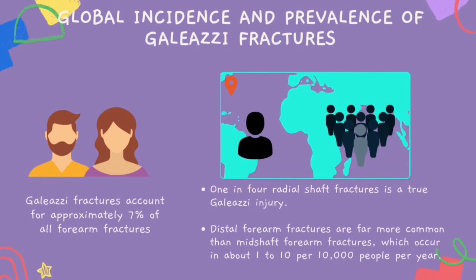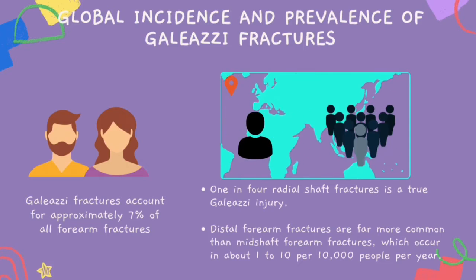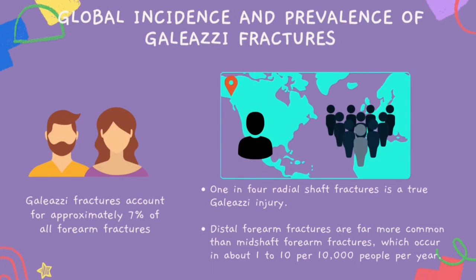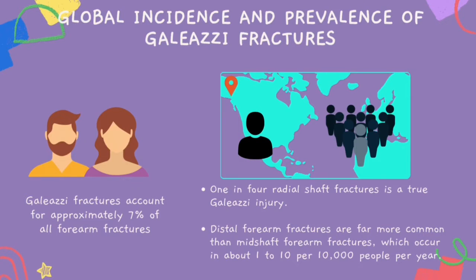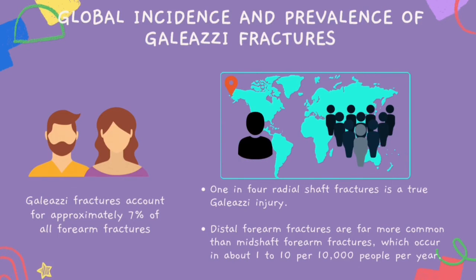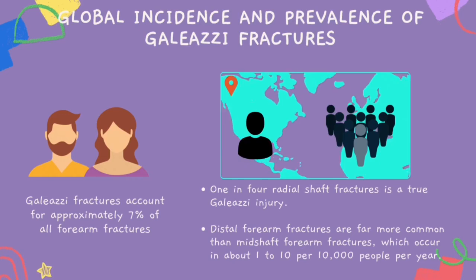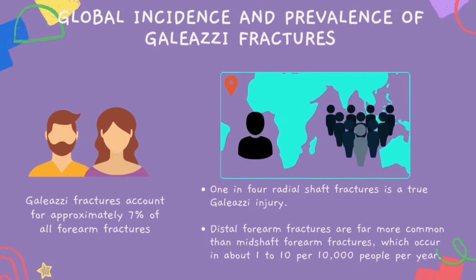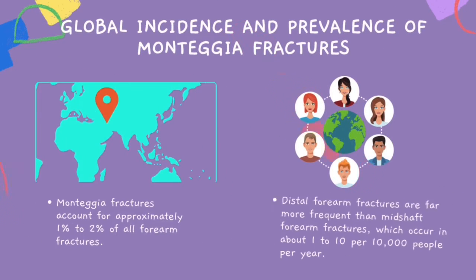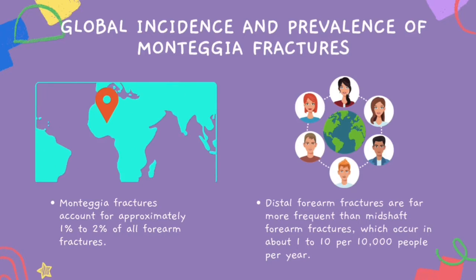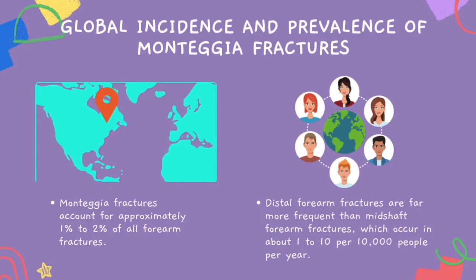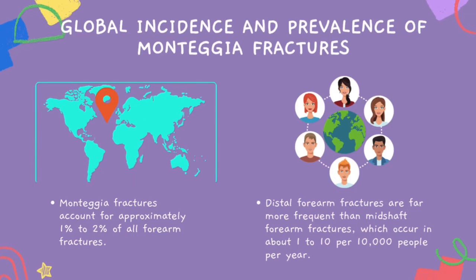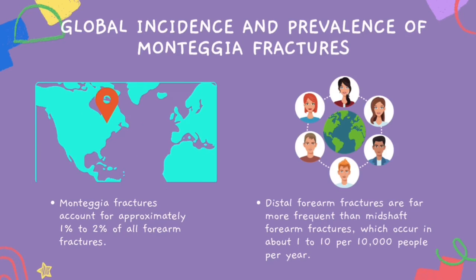For global incidence and prevalence, Galeazzi fractures account for approximately 7% of all forearm fractures in adults, and 1 in 4 radial shaft fractures is a true Galeazzi injury. Distal forearm fractures are far more common than mid-shaft forearm fractures, which occur in about 1 to 10 per 1,000 people per year.